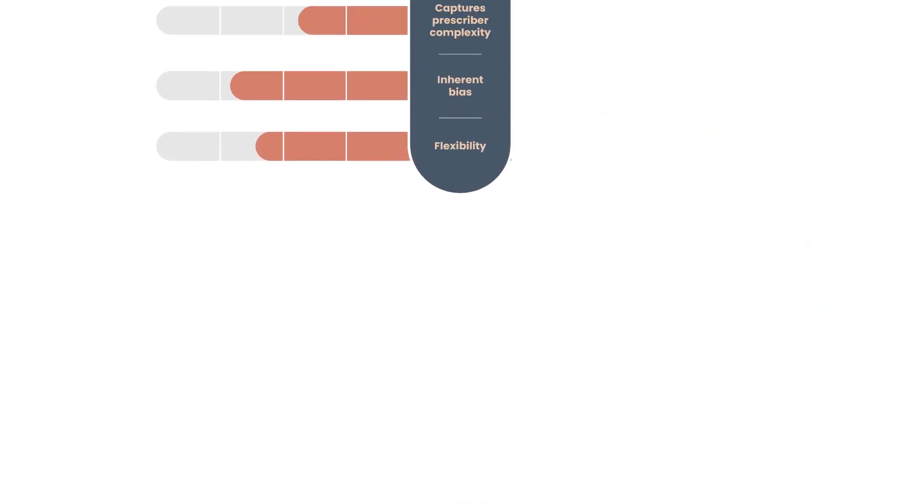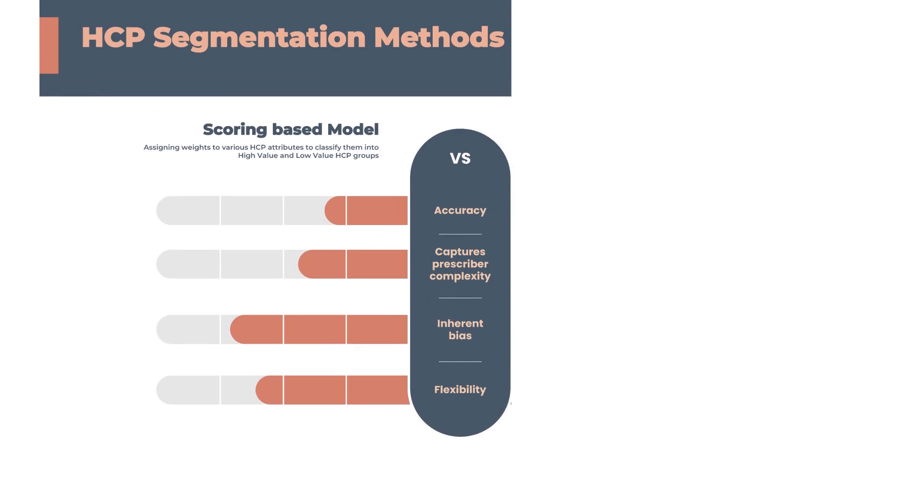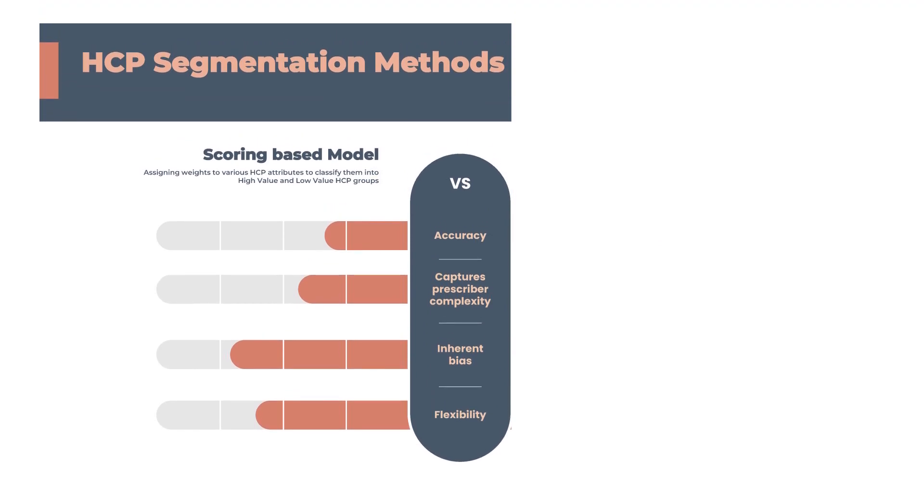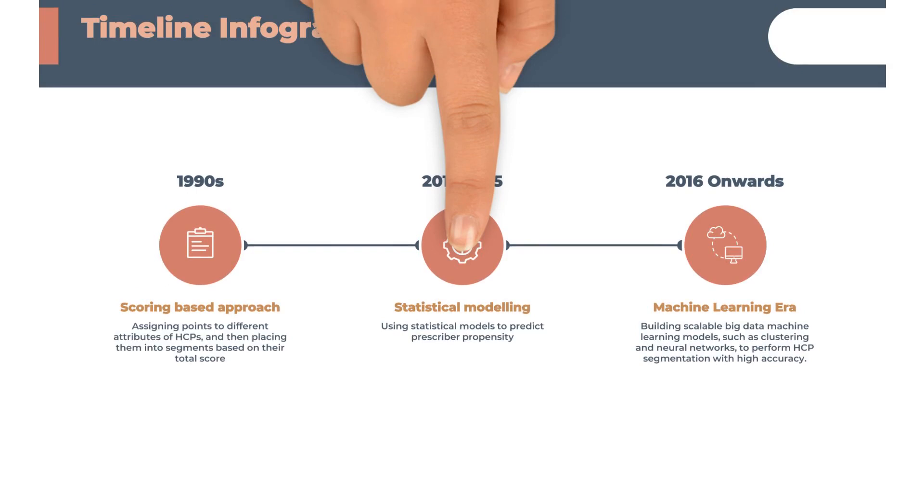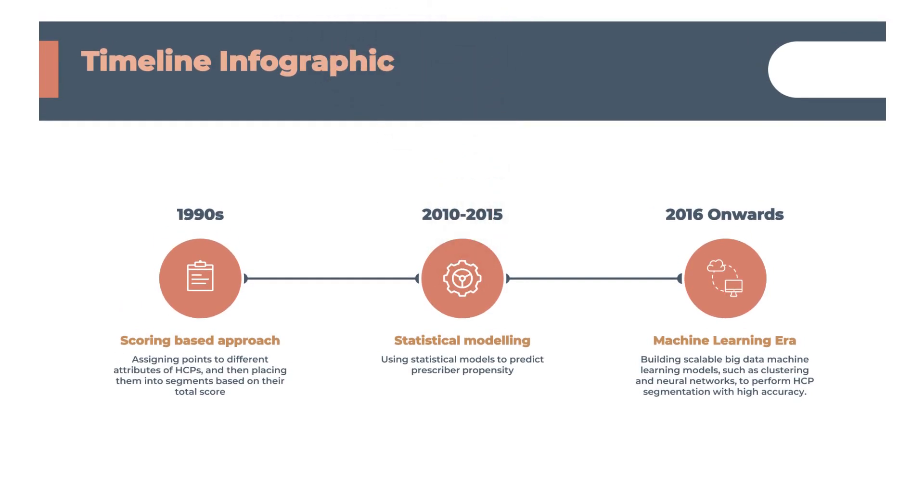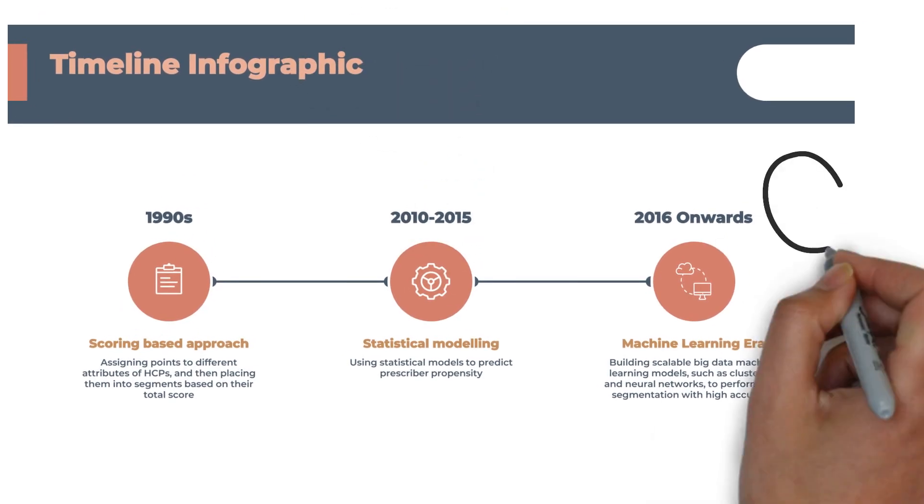Traditionally, this was done with a scoring-based approach, assigning points to different attributes of HCPs. But now, machine learning models are taking center stage, segmenting HCPs based on various predictors with far better accuracy.